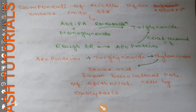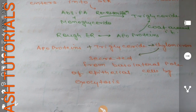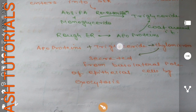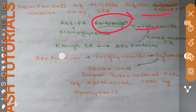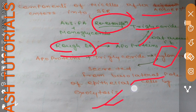After entering the enterocyte, components of the micelles enter the smooth endoplasmic reticulum (SER), where the absorbed fatty acids and monoglycerides undergo reesterification to form triacylglyceride. From the rough endoplasmic reticulum (RER), apoproteins come and bind to the triglyceride, leading to the formation of chylomicrons. These chylomicrons are then secreted from the basolateral side of the epithelial cells by exocytosis.